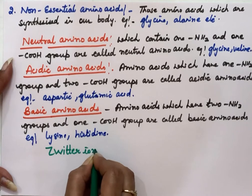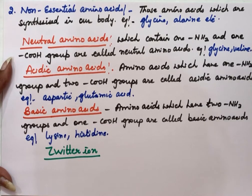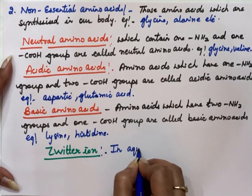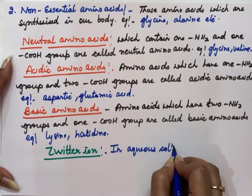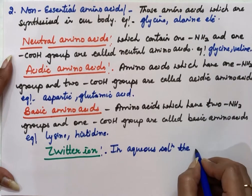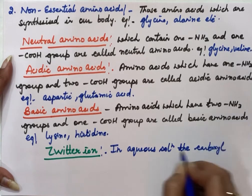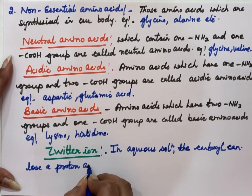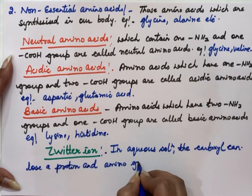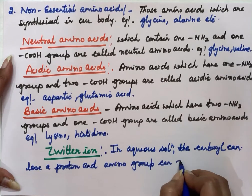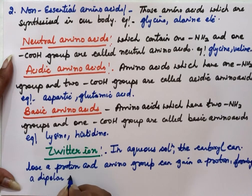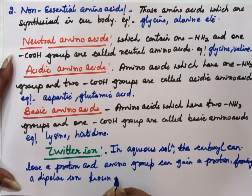Ions are of two types: cation and anion. But what is a zwitterion? A zwitterion is an ion which has both positive and negative charges in it. In aqueous solution, the carboxyl group of an amino acid can lose a proton, and that proton is gained by the amino group, forming a dipolar ion — which is known as a zwitterion.